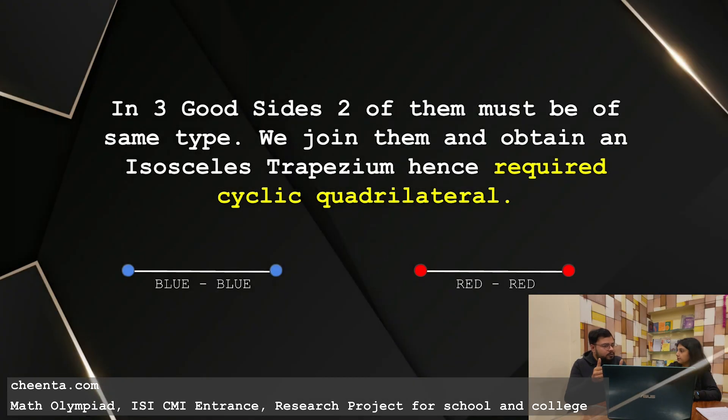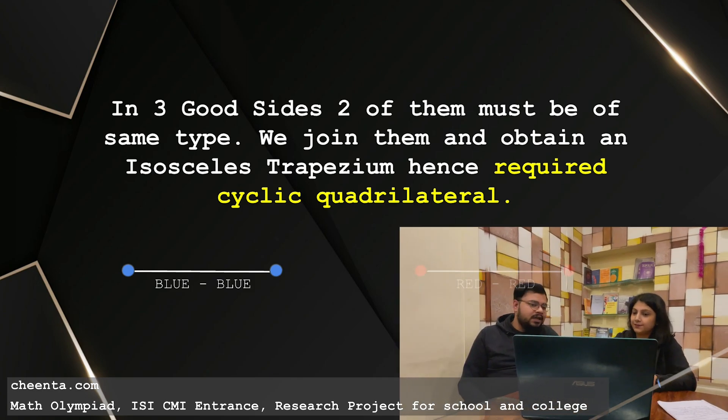So what we found, we are almost to the end of the problem. I think you can understand now. So let's say if there are two red-red good sides, these two are parallel and we join them, we get our isosceles trapezium. And that's what we were looking for. So we got our required cyclic quadrilateral and that solves the problem. So I think you have understood the problem now. Yes, I have understood.